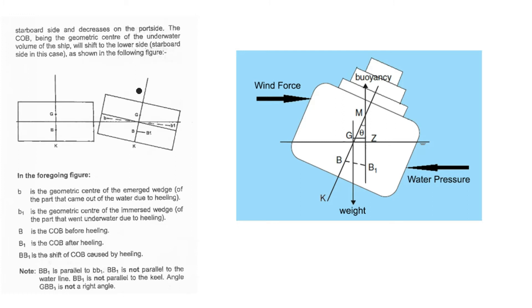So this figure, there are some important points here. The small B is center of buoyancy before heeling. And B1 is the new center of buoyancy after heeling. In the note, it is written that BB1 is parallel to the water line and BB1 is not parallel to the center line. The center of buoyancy shift is not at right angle.